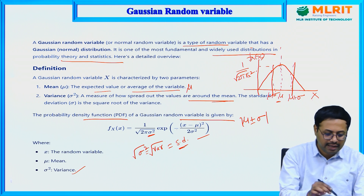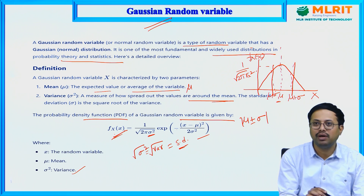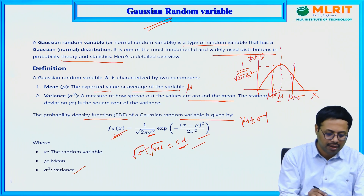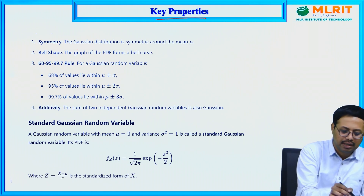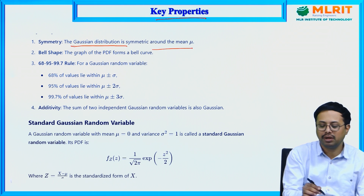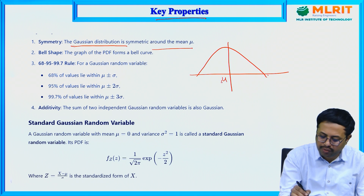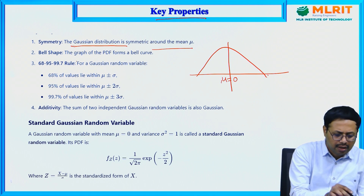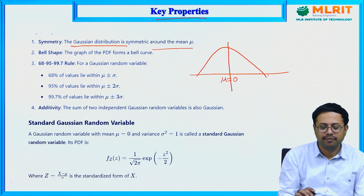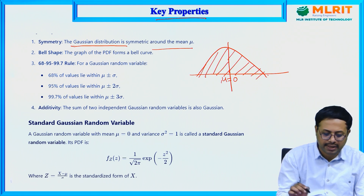This is the definition of the Gaussian random variable with respect to its density function, also known as the PDF of Gaussian. A key property is that the Gaussian distribution is symmetric about the mean — for example, when μ = 0, the curve is symmetric. The graph of the PDF is a bell-shaped curve, and both the left and right sides have the same percentage of variation.